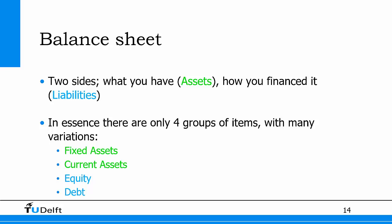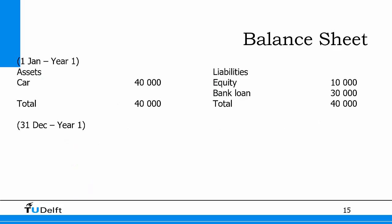On January 1st of year one, you had a car worth 40,000 euros and no cash, so fixed assets are 40,000, current assets are zero, giving a total of 40,000 on the left. On the right, you put in 10,000 of your own money as equity and took a bank loan of 30,000 as debt — also totalling 40,000.